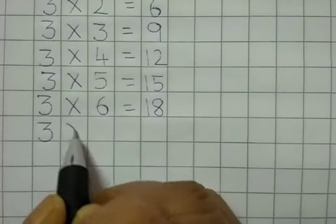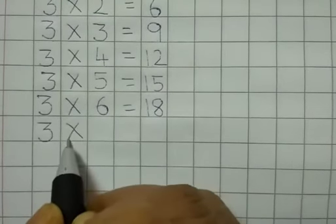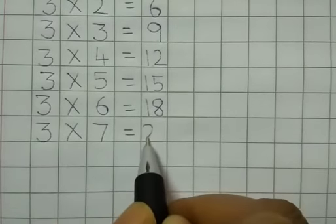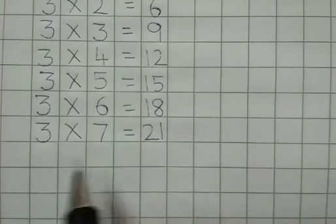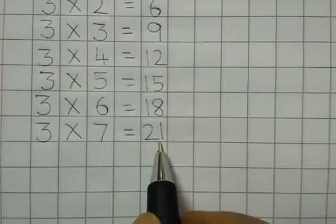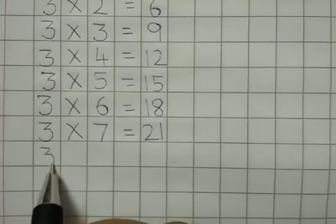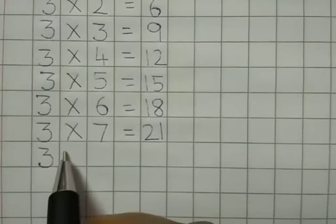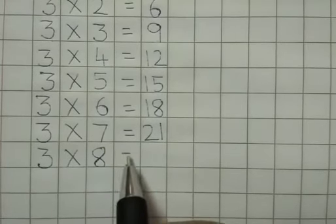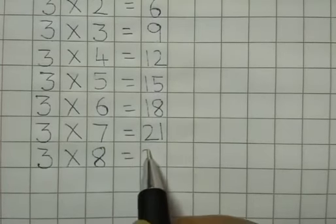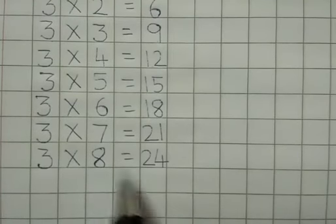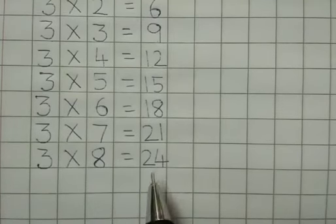Three — multiplication sign — seven is equal to twenty-one. Three sevens are twenty-one. Three — the sign — eight is equal to twenty-four. Three eights are twenty-four.